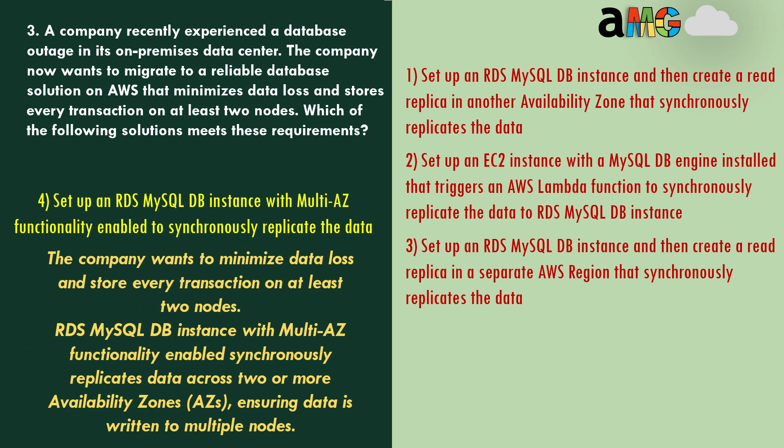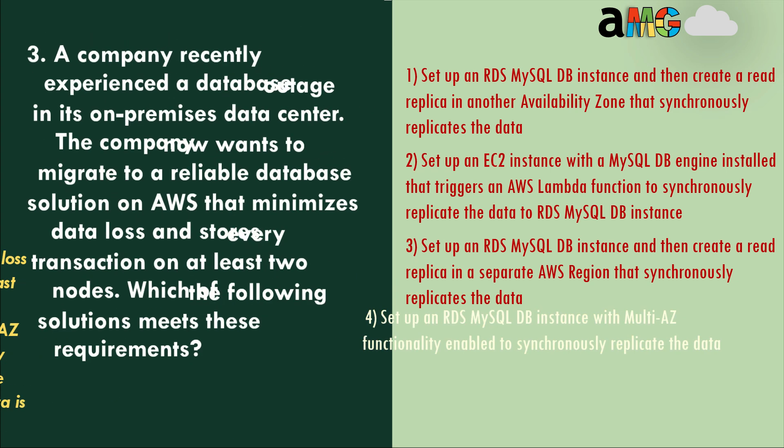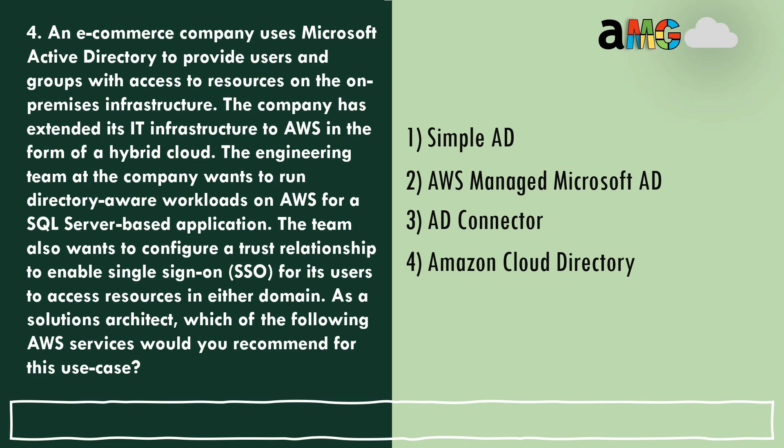Option 4 — set up an RDS MySQL DB instance with Multi-AZ functionality enabled to synchronously replicate the data. This is correct because the company wants to minimize data loss and store every transaction on at least two nodes. RDS MySQL with Multi-AZ enabled synchronously replicates data across two or more availability zones, ensuring data is written to multiple nodes. Option 4 is the correct answer.